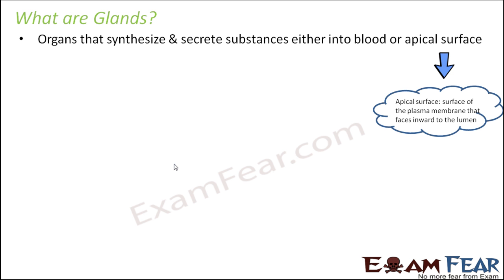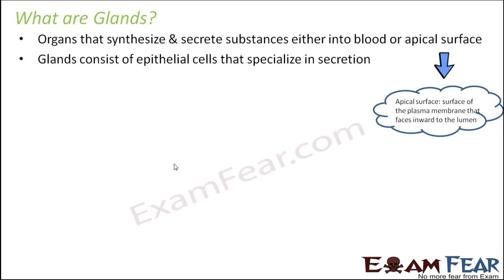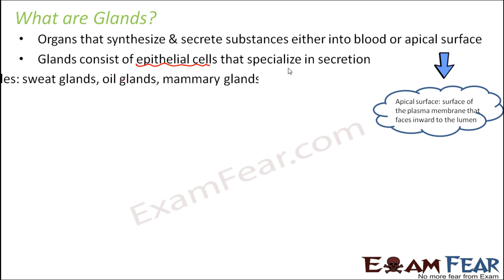When you say apical surface, it could be the surface of the plasma membrane that faces towards the lumen — that means towards the body cavity. Glands generally consist of epithelial cells which are specialized in secretion. You remember we spoke about many different types of epithelial cells: squamous epithelium, cuboidal epithelium, and so many others. One function of epithelial cells is that they can secrete, so glands are made up of those types of epithelial cells.